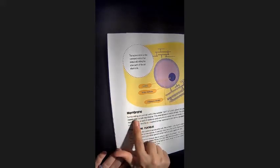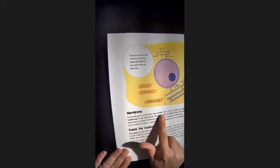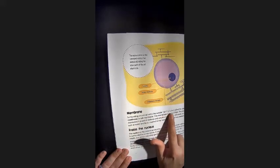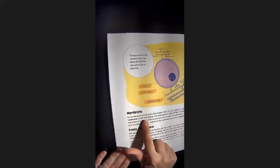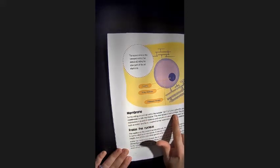Membrane. Surrounding an animal cell is the outside skin of a cell, called the plasma membrane, or cell membrane. This membrane is made of fats.